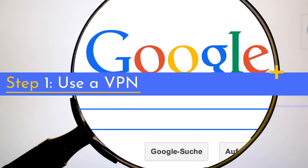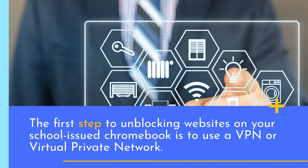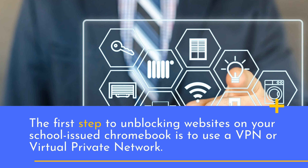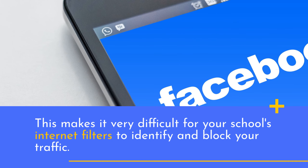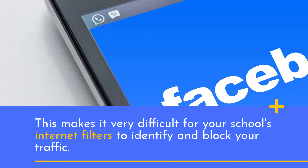Step 1: Use a VPN. The first step to unblocking websites on your school-issued Chromebook is to use a VPN, or virtual private network. A VPN works by routing your internet connection through a private server, which encrypts your traffic and conceals your location. This makes it very difficult for your school's internet filters to identify and block your traffic.